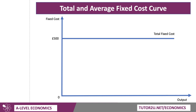Let's do a little simple numerical calculation. If output is going from 1, 2, 3, etc., all the way through to 10 — so this is output per week on the x-axis — hopefully you can see that. If output is 1 unit, then the total fixed cost of 500, well, the average will be 500 because you just divide total by the output. So when output is 1, average fixed cost will be the same as total fixed cost.